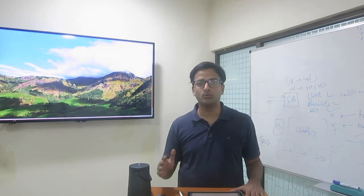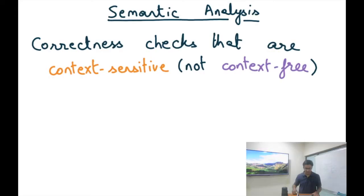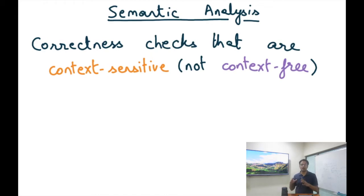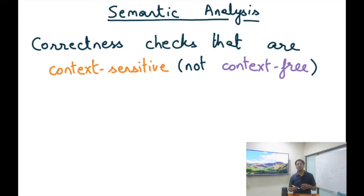The first step we do with the abstract syntax tree just after parsing is semantic analysis. Semantic analysis is a set of correctness checks that are context-sensitive. Context-sensitive stands in stark contrast to context-free. When we discussed context-free grammars, we were checking whether a program satisfies context-free properties of the grammar. But those checks are limited because they are context-free. Anything that cannot be done in the parsing step because it was context-sensitive is done in the semantic analysis step.